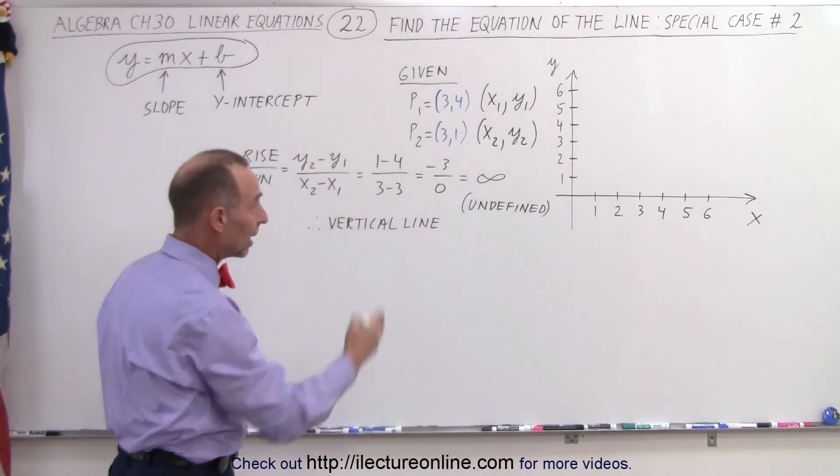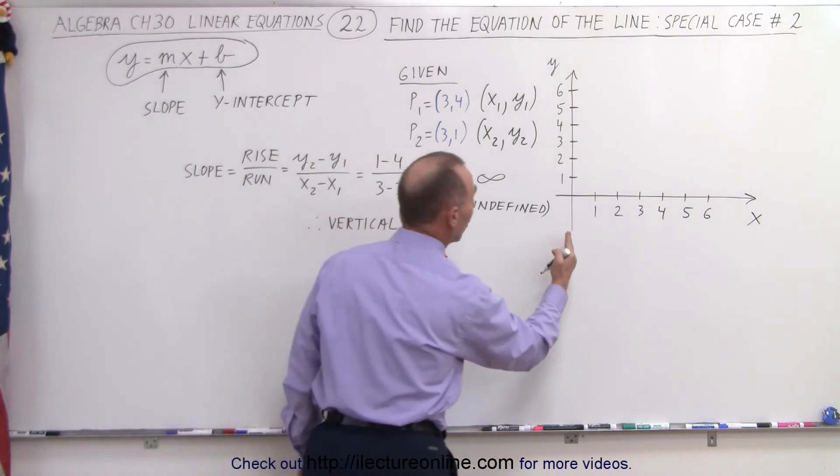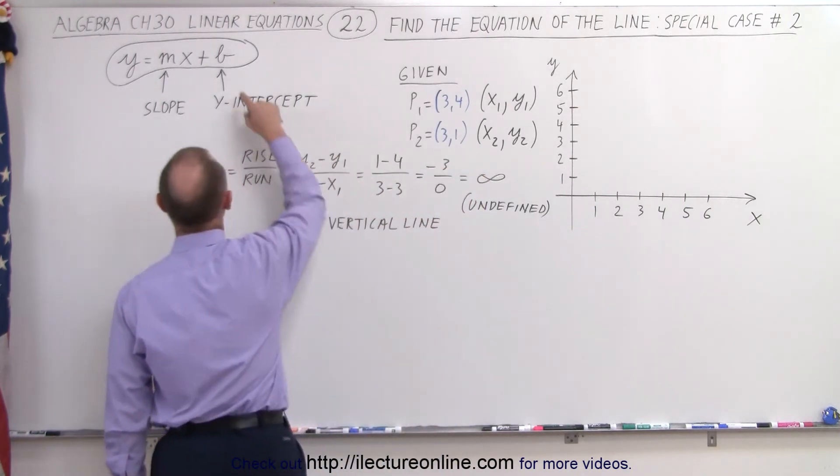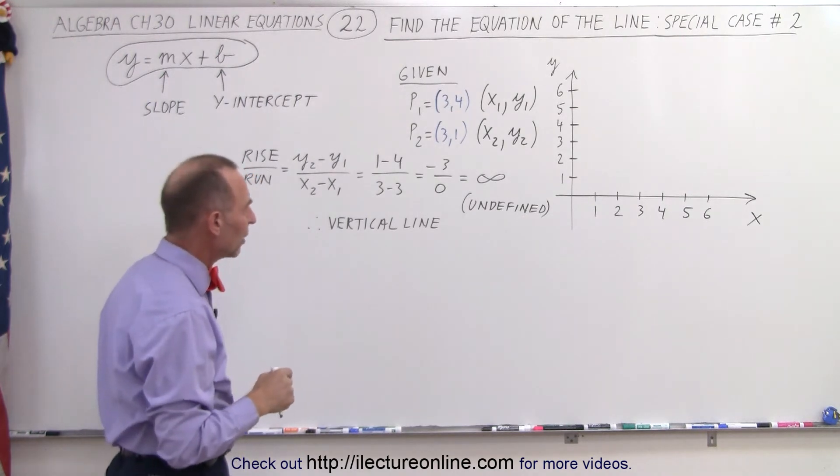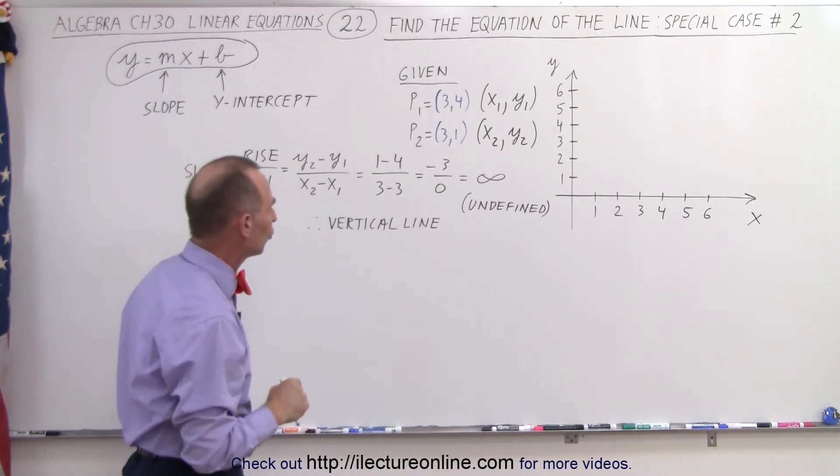And if we're going to have a vertical line, then there's no way we can ever cross the y-axis, so there definitely is not a y-intercept. So things are beginning to be a little strange. Now let's go ahead and plot those two points.